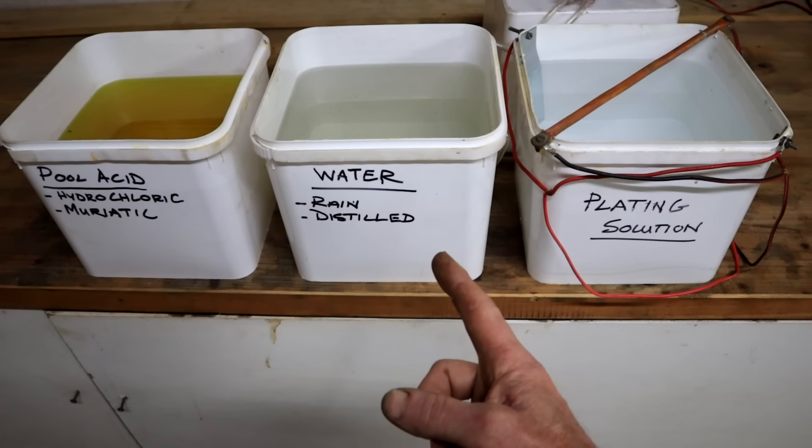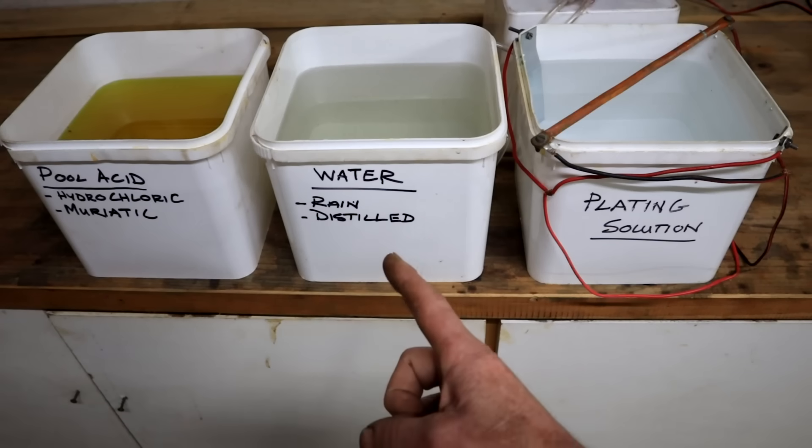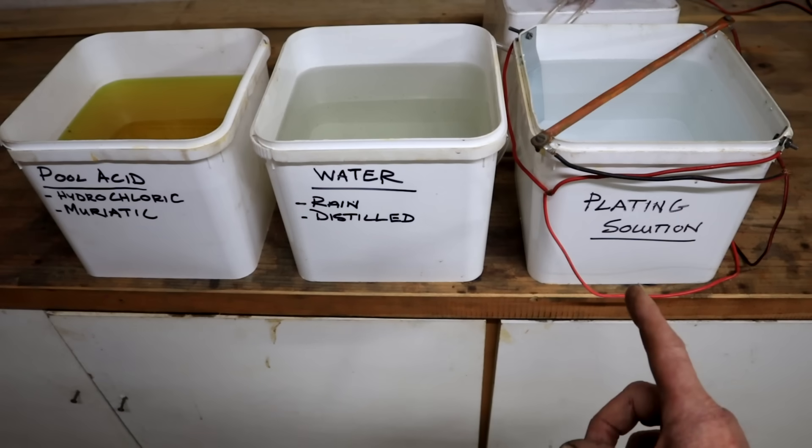Here in the second one I've got rainwater. If you don't have access to rainwater, rather use distilled water. Tap water with chlorine and all of that in it, it's not going to work so well. And then the last one is my plating solution. I'm going to show you how to make that.